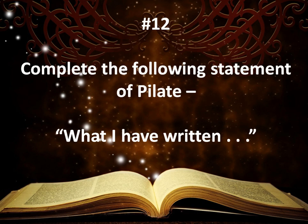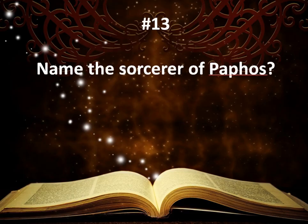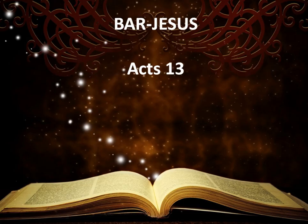Number twelve: Complete the following statement of Pilate: 'What I have written...' — what did Pilate say then? The answer is: 'What I have written, I have written.' John 19. Number thirteen: Name the sorcerer of Paphos. The answer was Bar-Jesus, in Acts 13.